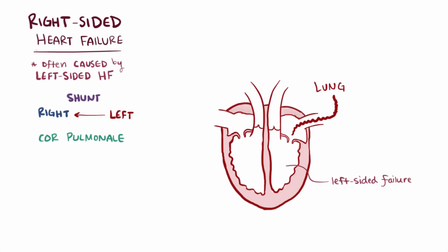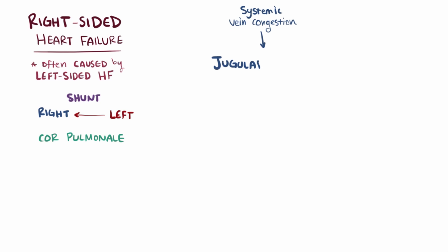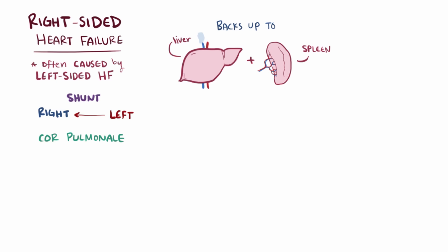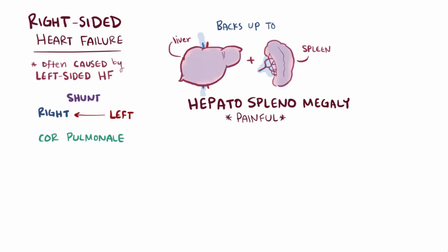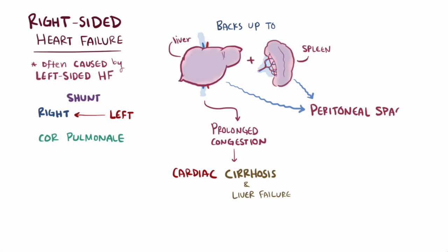With left-sided failure, blood backs up to the lungs; with right-sided failure, blood backs up to the body, causing congestion in the veins of the systemic circulation. One common manifestation is jugular venous distension, where the jugular vein becomes enlarged and distended in the neck. When blood backs up to the liver and spleen, fluid can move into the interstitial spaces within those organs, causing hepatosplenomegaly, which can be painful. Long-standing liver congestion can eventually lead to cirrhosis and liver failure, called cardiac cirrhosis. Excess interstitial fluid near the liver and spleen can also move out into the peritoneal space; since that cavity can accommodate a lot of fluid, this buildup is called ascites.